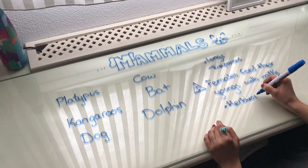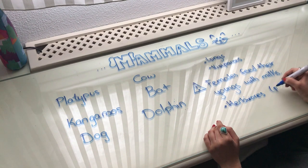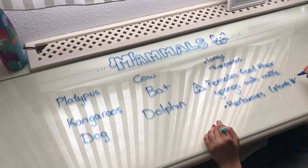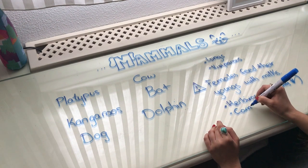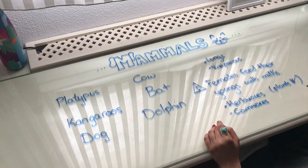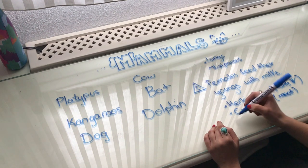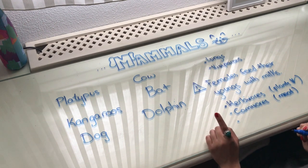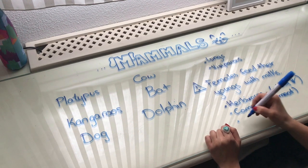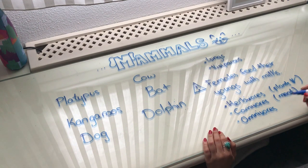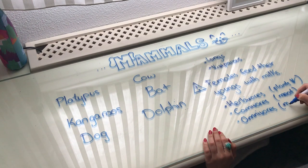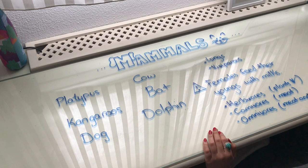Herbivores are those animals that feed on plants. The second group is carnivores, and those are animals that eat meat. And the third group — let's see if you know, do you remember? Yes — omnivores are the group of mammals that eat meat and plants.